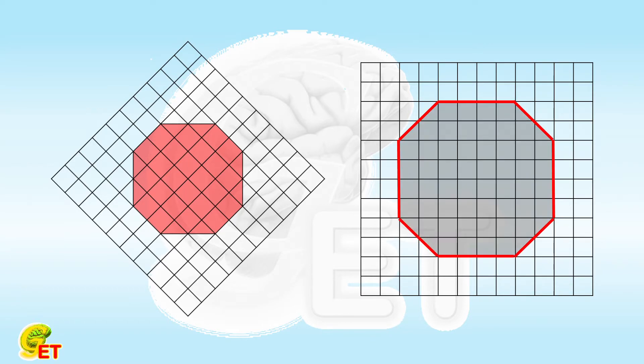To verify it, the area of the original octagon is 28 grids, and that of the new octagon is 56 grids. So it is correct.